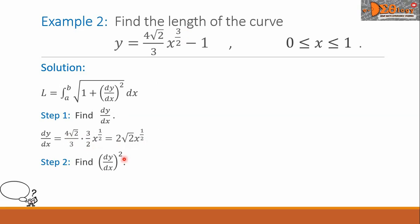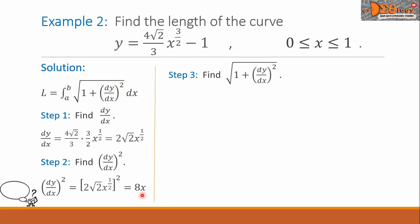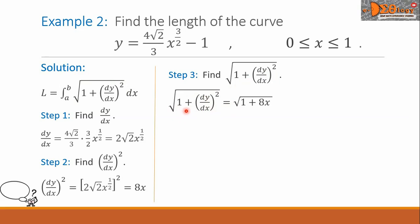Step 2: find the square of dy/dx. We find the value of that part of the formula. The square of dy/dx simplifies to 8x. Step 3: let us find the radical itself — 1 plus the square of dy/dx. Substituting the answer from step 2, we have the square root of 1 plus 8x.